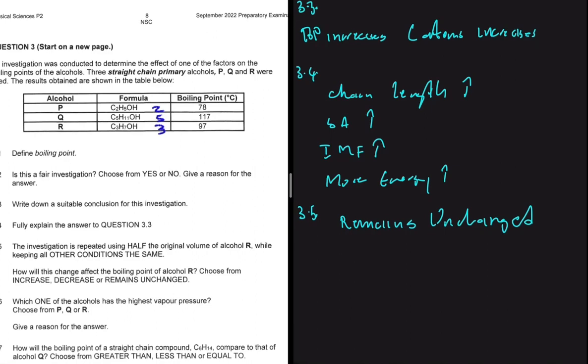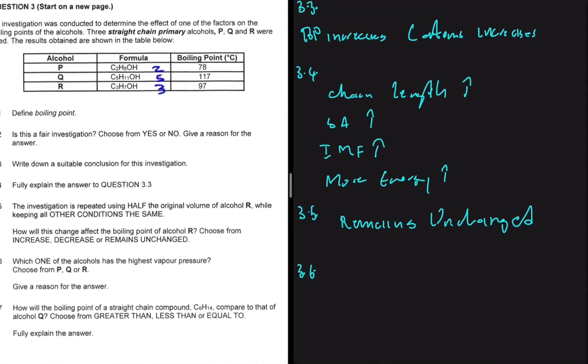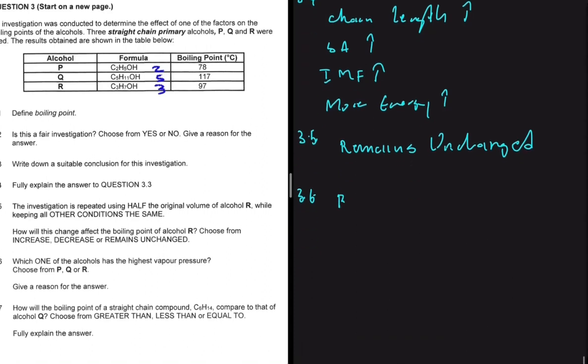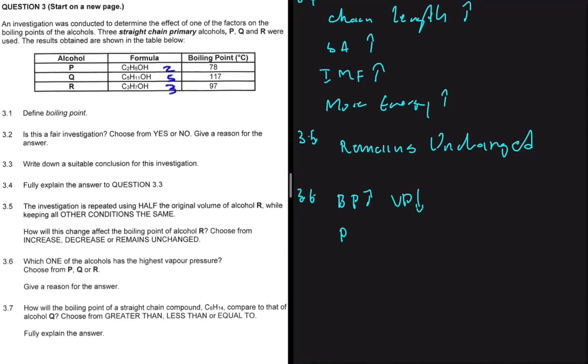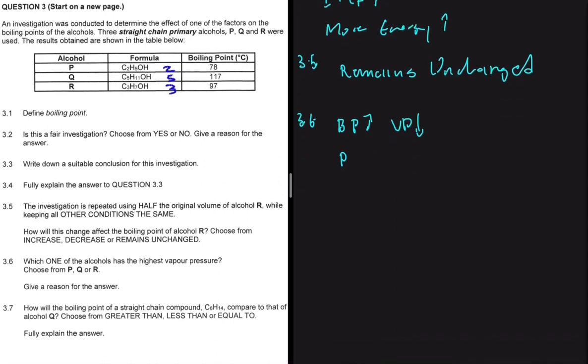The volume doesn't affect the boiling point of a substance. And 3.6 is saying, which one of the alcohols has the highest vapor pressure? Choose from P, Q, or R. Give a reason for your answer. The higher the boiling point, the lower the vapor pressure. So the compound with the higher vapor pressure is supposed to have the lowest boiling point. That will be alcohol P, since it has a 78 degrees Celsius boiling point. The lower the boiling point, the higher the vapor pressure. So our answer for 3.6 is compound alcohol P.